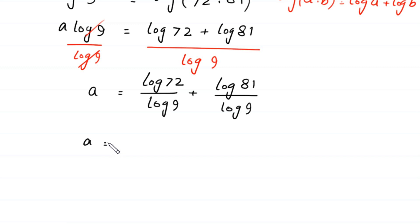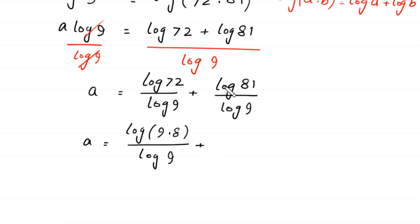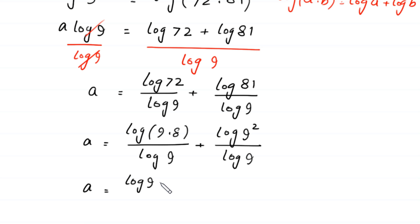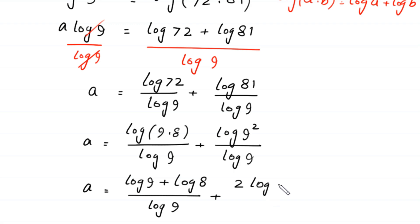Next, this log of 72 can be written as log of 9 times 8 divided by log of 9, plus this log of 81 can be written as log of 9 squared divided by log of 9. This log of 9 squared can be written as 2 times log of 9 divided by log of 9.